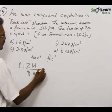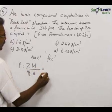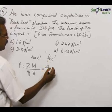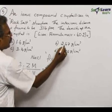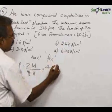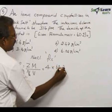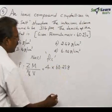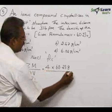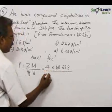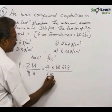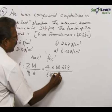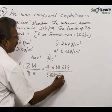Since FCC has Z = 4, the number of particles is 4. So we have 4 × 60.23 grams per mole in the numerator, divided by Avogadro's constant 6.023 × 10²³.